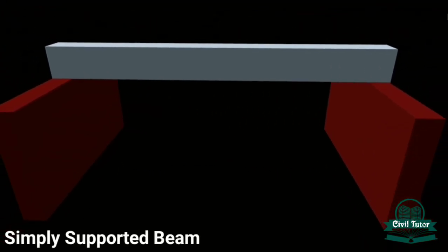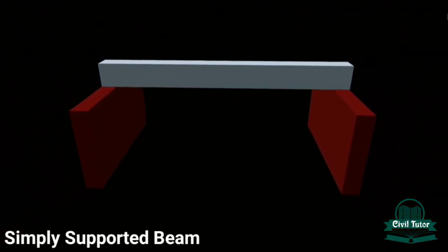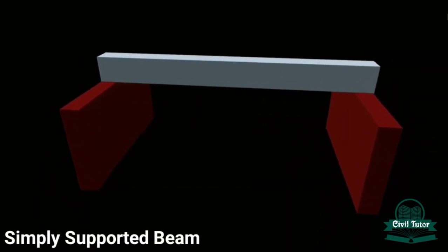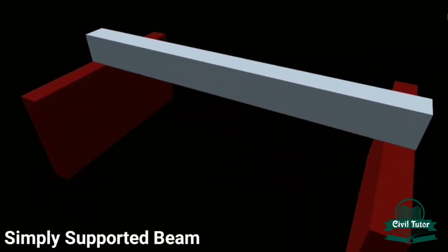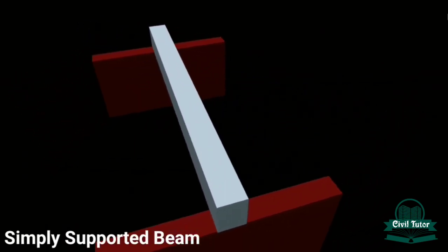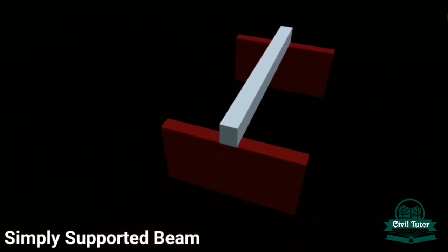The third one is the simply supported beam. It's a type of beam which rests freely on the supports at both of its ends. As shown in the animation, the beam is resting freely on walls at both of its ends.